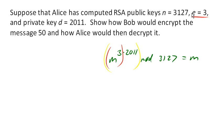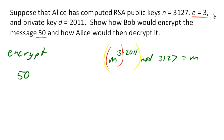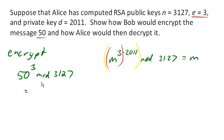So let's see what would happen with the message 50. To encrypt the message, Bob would take the number 50 and he has Alice's public key, so he's going to take 50 to the power of the encryption key and calculate 50 to the third mod 3127. He's probably going to need a little bit of calculational help for this, but it turns out that this number is 3047.